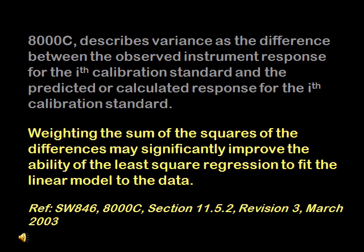For example, it is known that measurements of temperature with a thermometer have a constant error structure, whereas measurements by GC with detectors like FPD, FID, NPD, and other conventional GC detectors, including MS, have a proportional error structure. Therefore, it would be appropriate to use an unweighted regression for temperature and a weighted regression for measurements by GC with conventional detectors and MS.